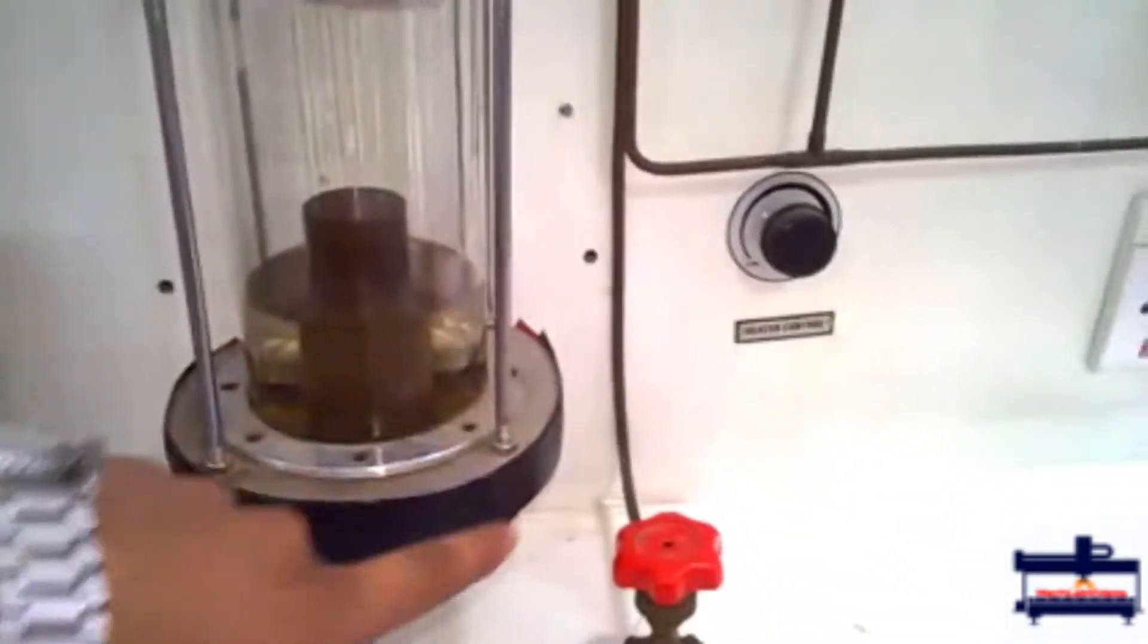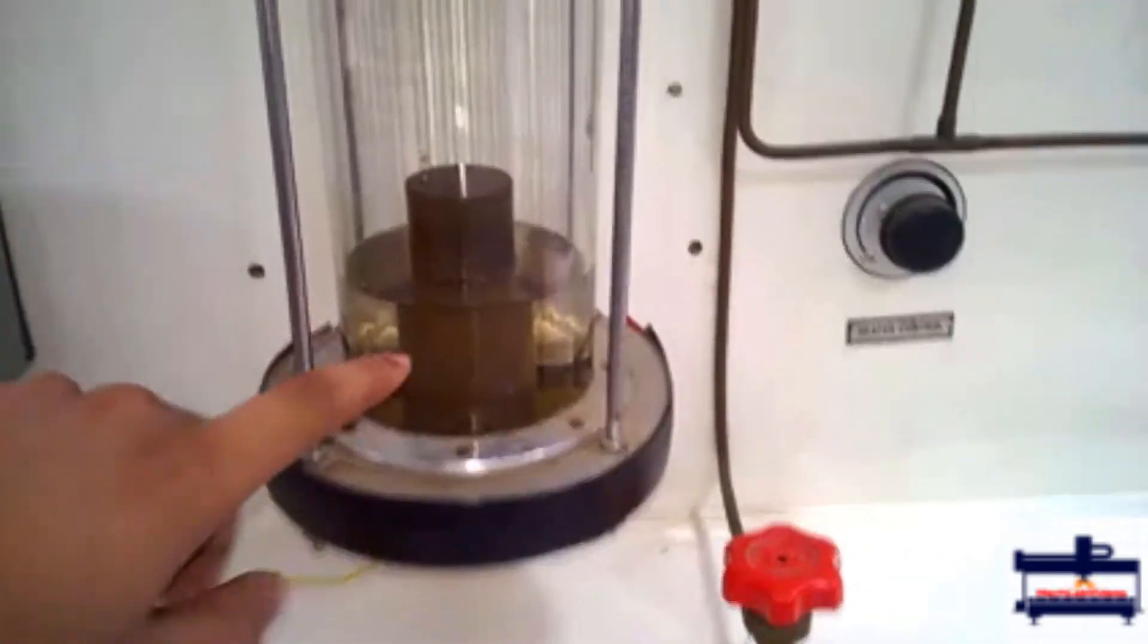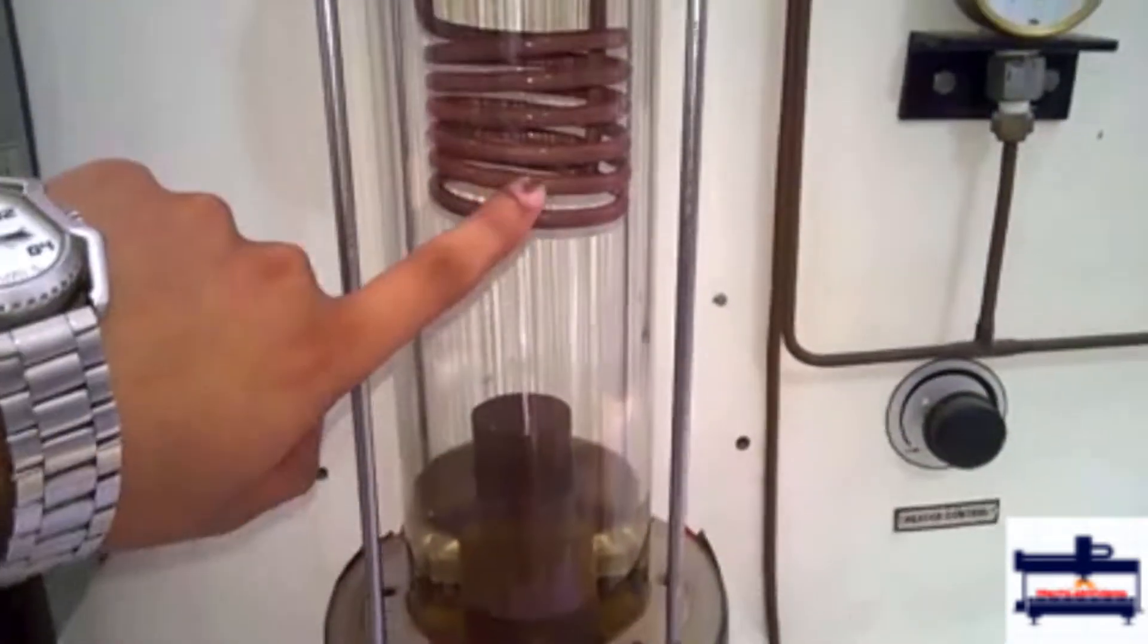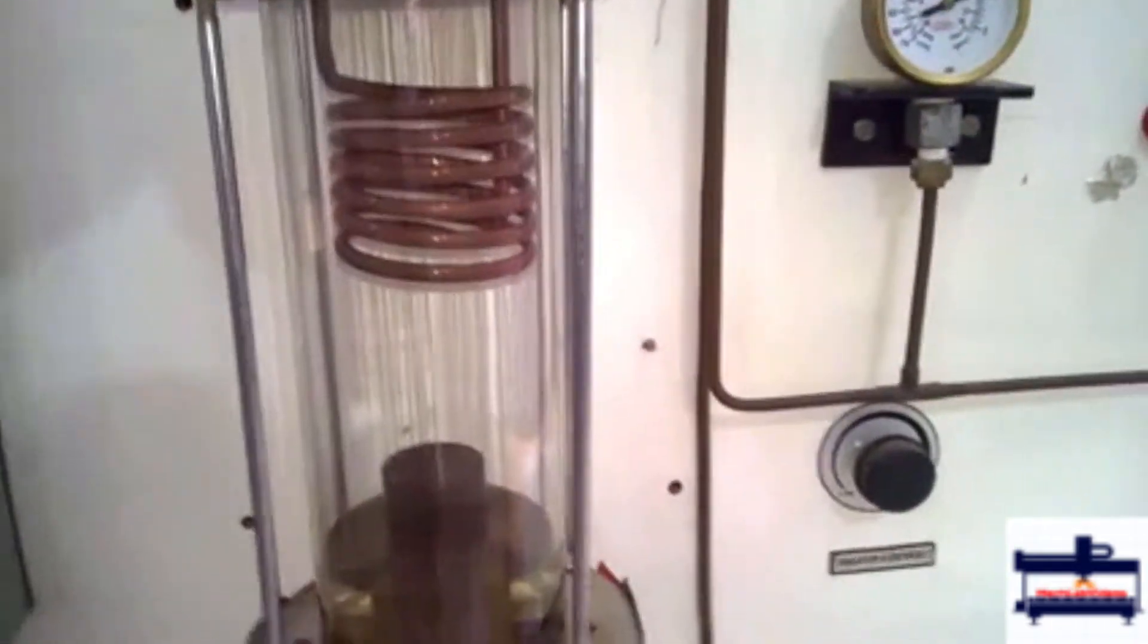Now we must turn on the heater and make sure that the fluid inside, which is freon, starts boiling. Once it starts boiling, the vapors come in contact with the condenser and start getting condensed.